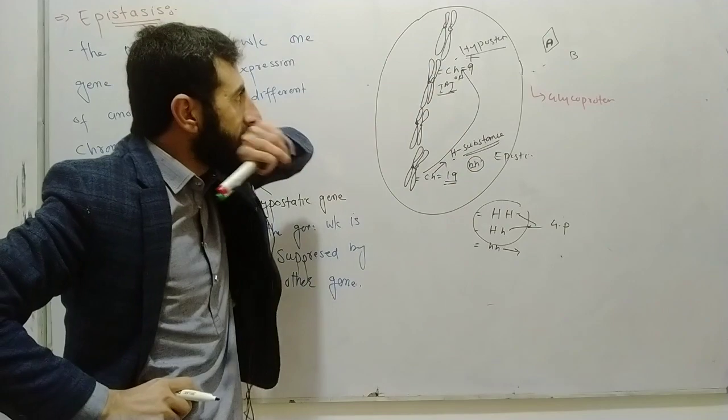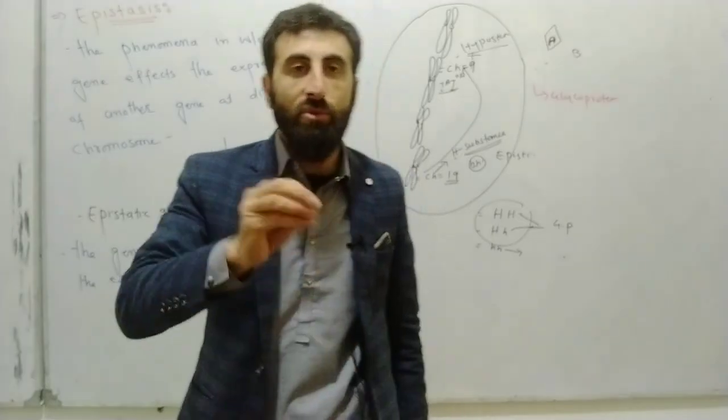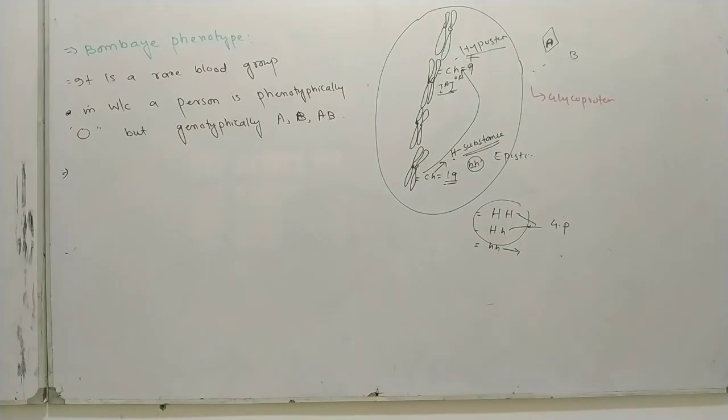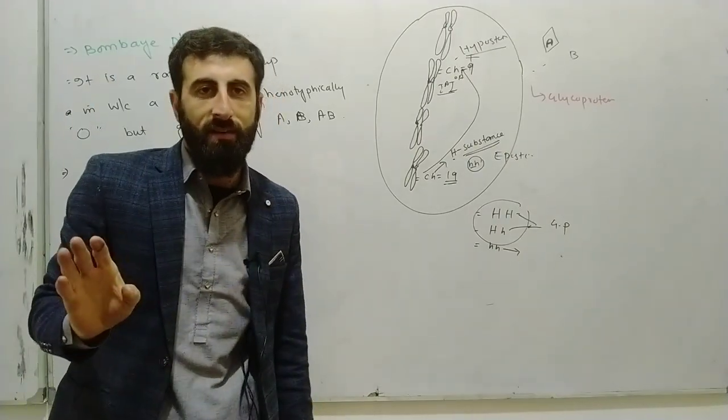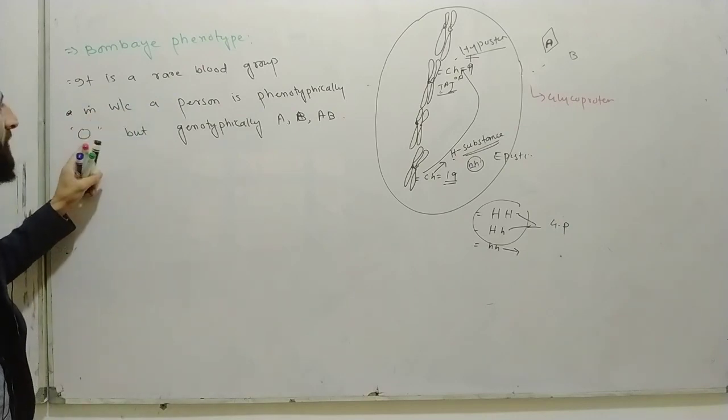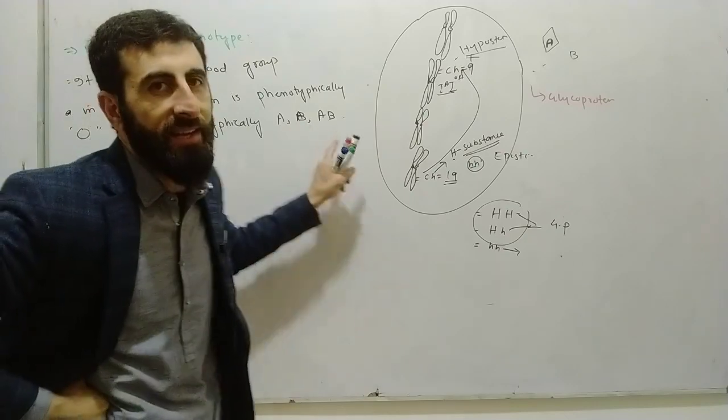Such a condition is called epistasis. I will give you an example - the Bombay phenotype. Bombay phenotype is an epistasis example. It is a rare blood group in which a person is phenotypically O, but genotypically A, B, or AB.